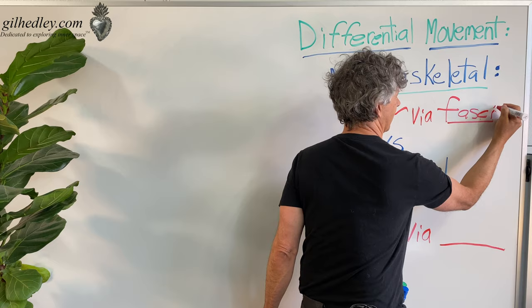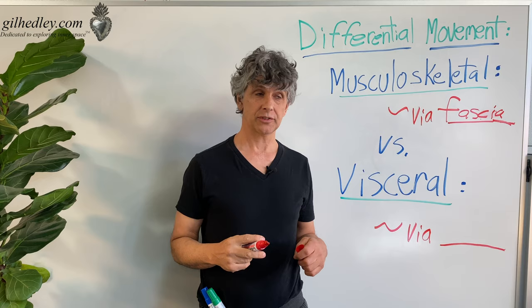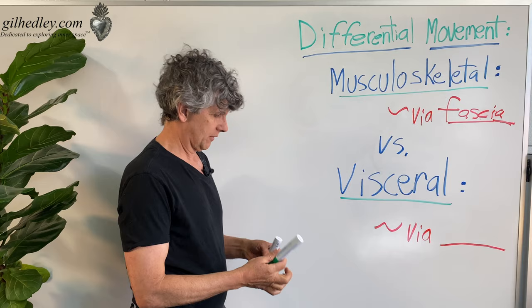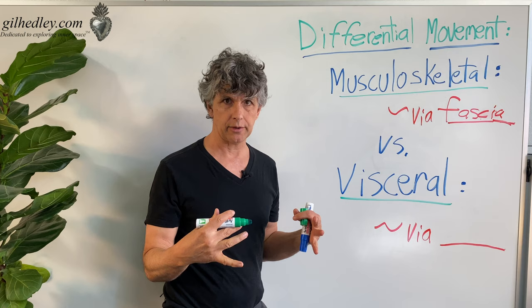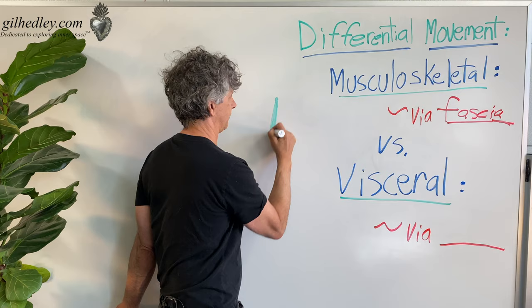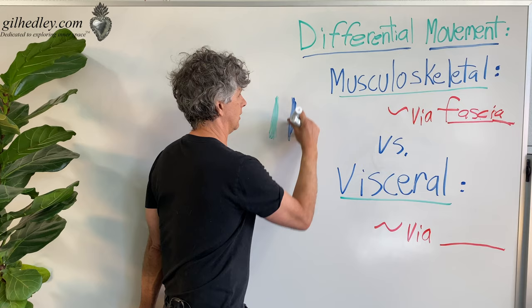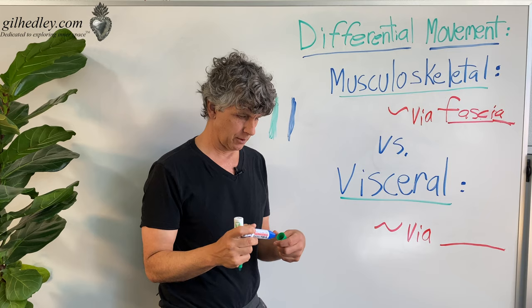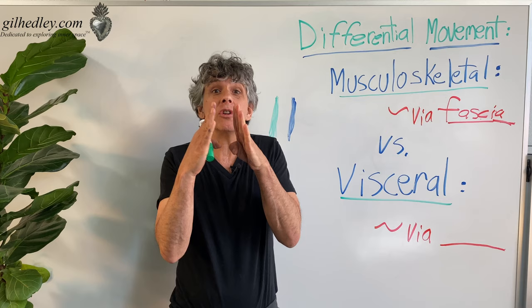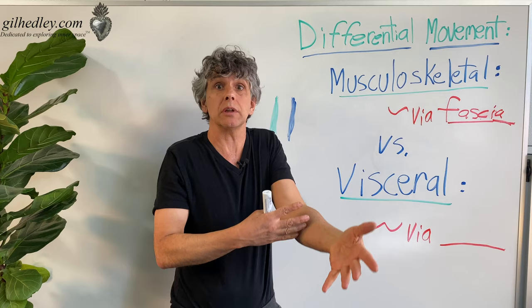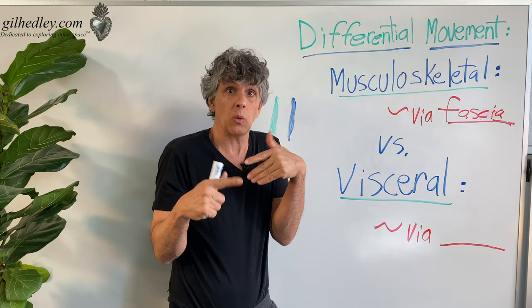Fascia is the key to understanding differential movement in the musculoskeletal system. If I've got a group of muscle tissue, let's say the biceps, and underneath it there's other muscle tissue called brachialis — we have two bundles of muscle fibers, fasciculi we'll call them. What enables them to move relative to each other is that they have different rates of speed; they're moving at different rates relative to each other. And what enables that differential movement is fascia.